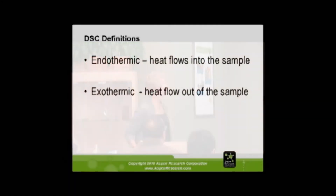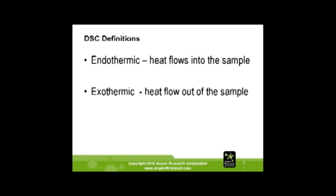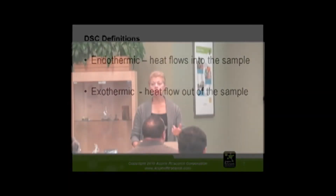Endothermic on our machine is heat flows into the sample, and that's a downward trend on our machine. Exothermic — heat flows out of the sample — which is upwards. Perkin-Elmer does it opposite, but on our DSC instruments, that's the way it's set up.